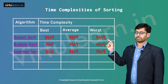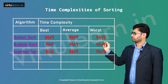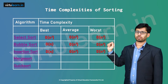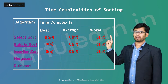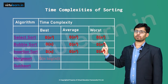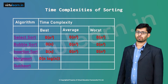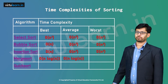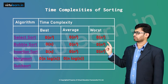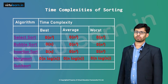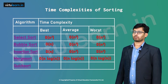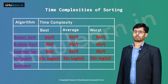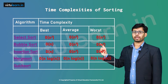Next, the divide and conquer techniques — merge sort and quick sort. For merge sort, the best case is O(n log n), the average case is O(n log n), and the worst case is also O(n log n). So for merge sort, all three cases are O(n log n).